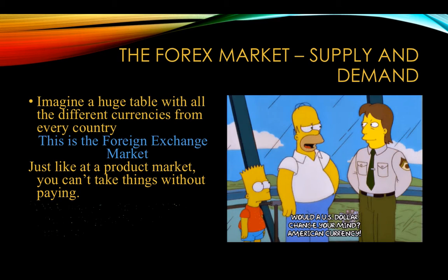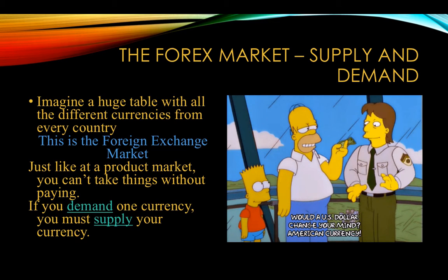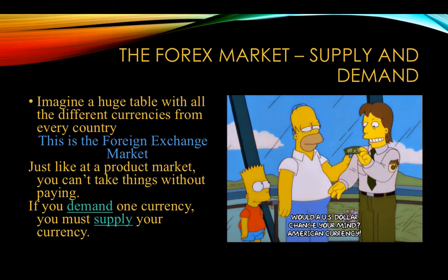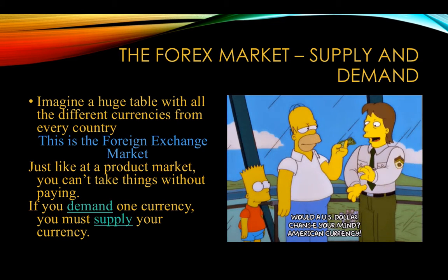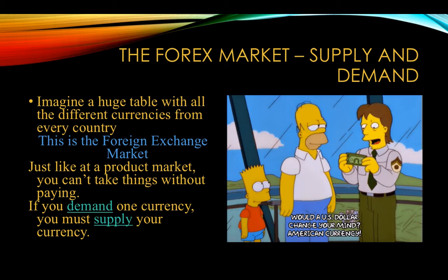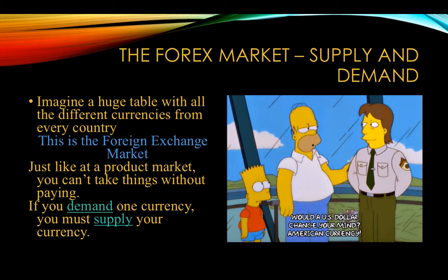The same thing happens with currency. If I'm buying yen — if I'm buying something from Japan, I need yen, I demand yen. Well, how do I get yen? I must supply my currency. And so I supply the dollar. Let's take a look at an example and I'll show you how this works.